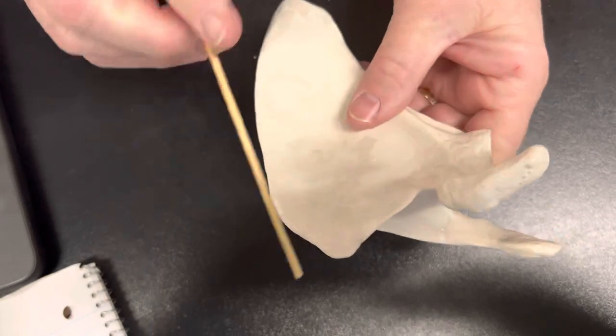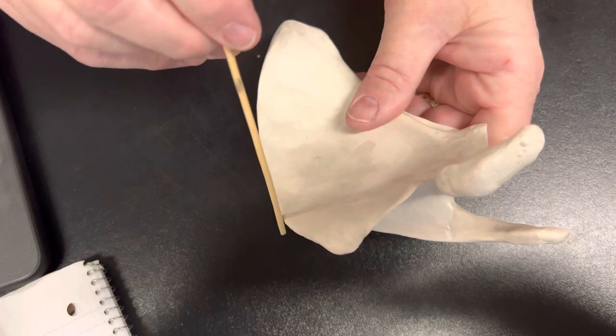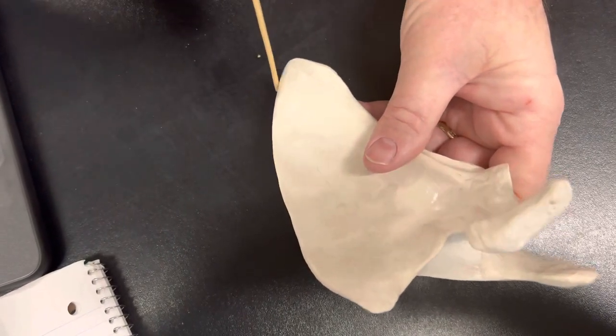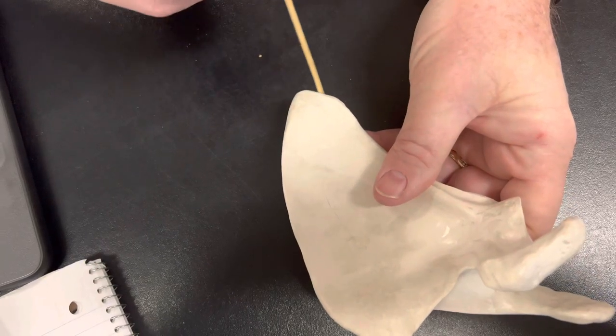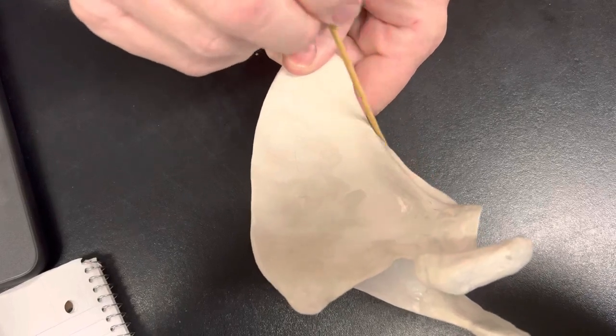Then if we were to look, this is going to be my superior border right here. This is going to be my medial border all along here. This is the inferior border or some people call it the inferior angle of the scapula, and this is the lateral border that's right here.